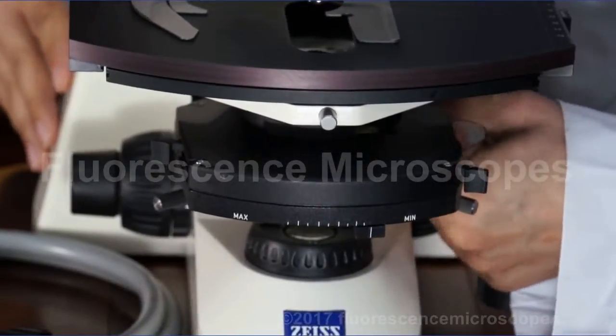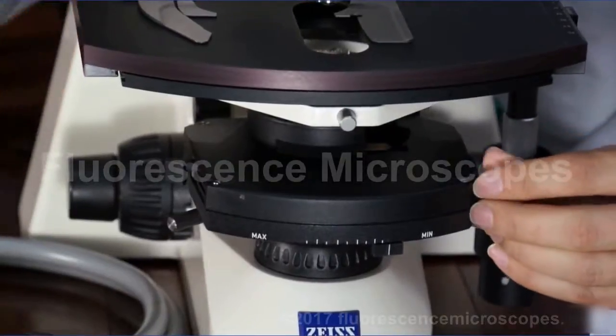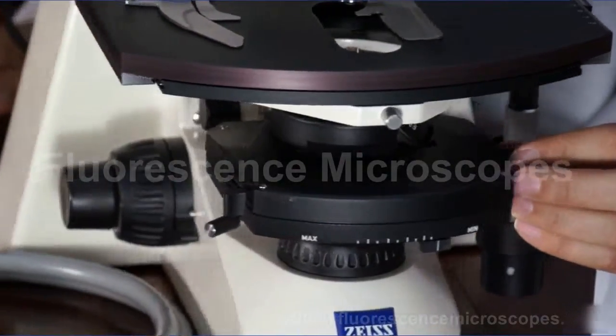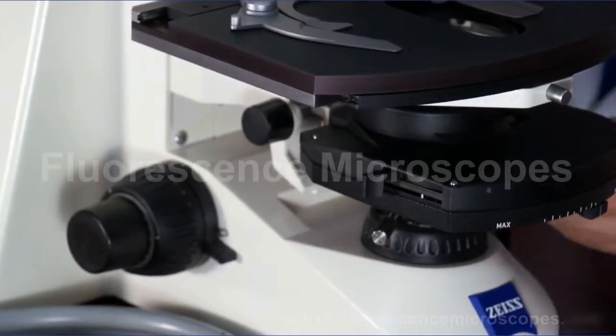The condenser has a flip-top on it. This is a flip-top portion. You would use this at the lower power objectives, like a 2.5 or in this case a 5x.